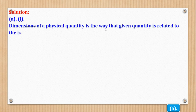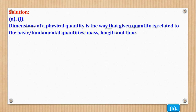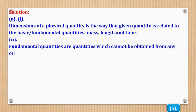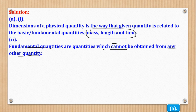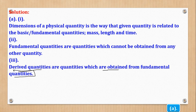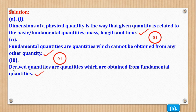For Roman 1, dimensions of a physical quantity is the way that a given quantity is related to the basic — or fundamental — quantities, and those are mass, length, and time. Roman 2: fundamental quantities are quantities which cannot be obtained from any other quantities. For derived quantities, they are the ones which are obtained from fundamental quantities.